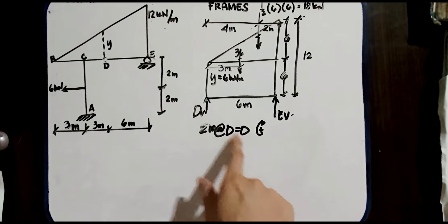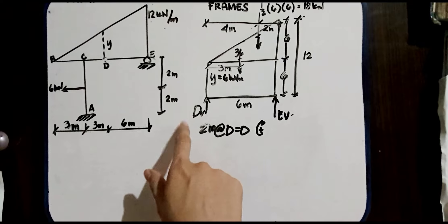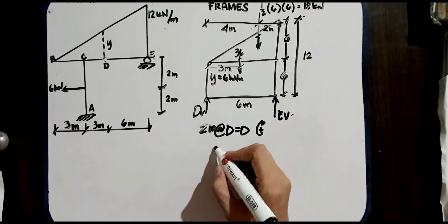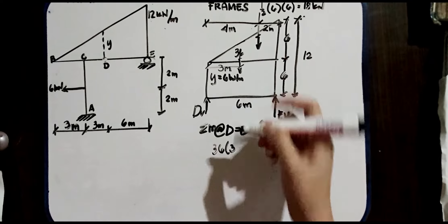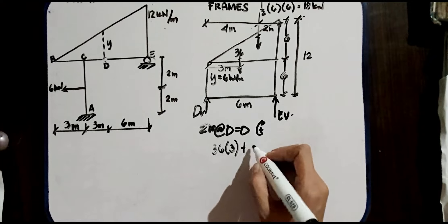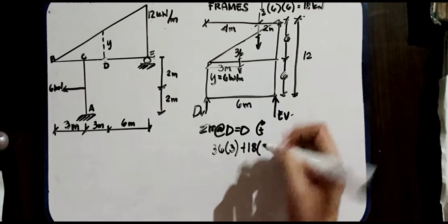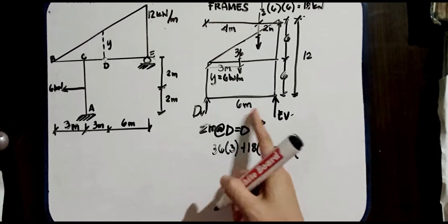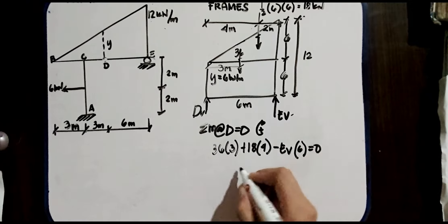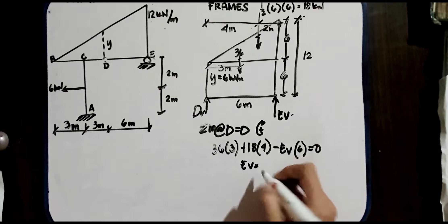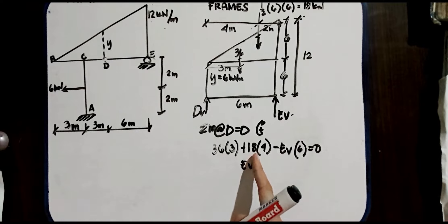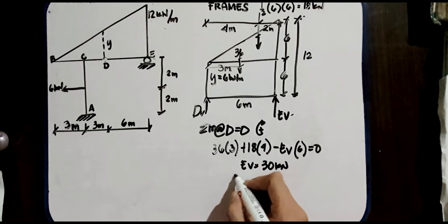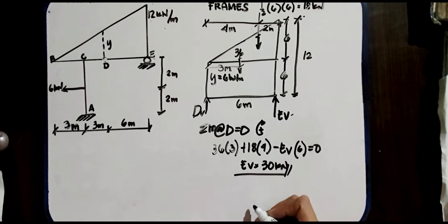Summation of moment at D equals 0, with clockwise positive. We have 36 × 3 plus 18 × 4 minus EV × 6 = 0. Therefore, EV = (36×3 + 18×4) / 6 = 30 kN. That is our EV.